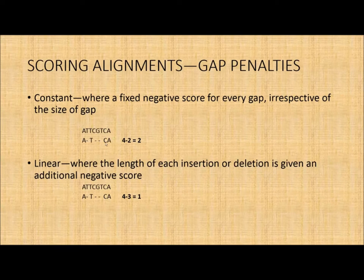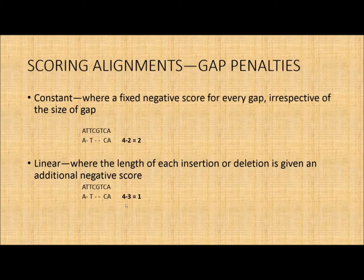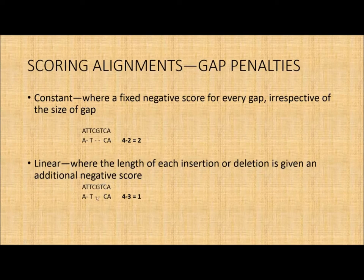That's the constant scoring method. You can do better than this. You can put more rigor into your scoring using what's called the linear score, where the length of each insertion or deletion is given an additional negative score. If the length increases, you give it another negative one. So if you have a negative one here, because there's one more gap, you give it another negative one. But because this gap is greater than one, you give it a greater penalty. So that's negative one, negative one, negative two — that's negative three, giving a score of one.